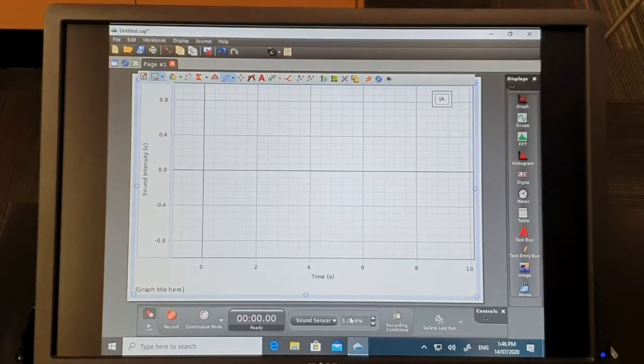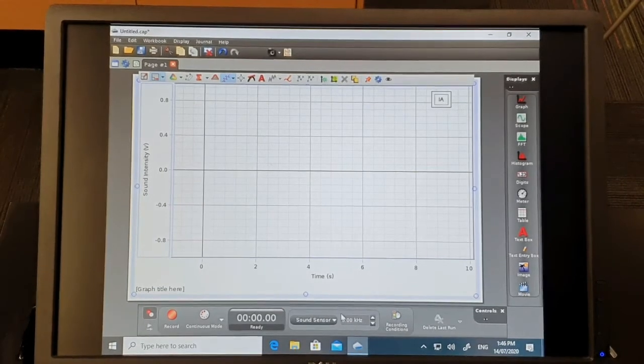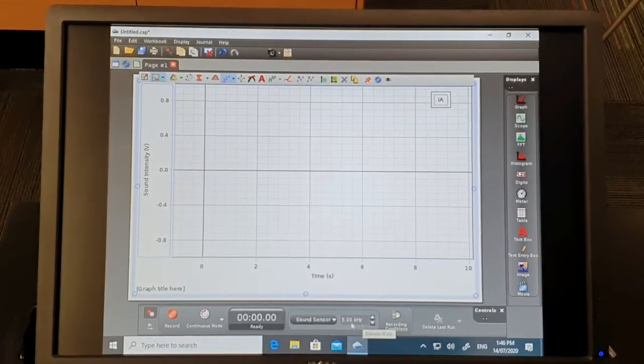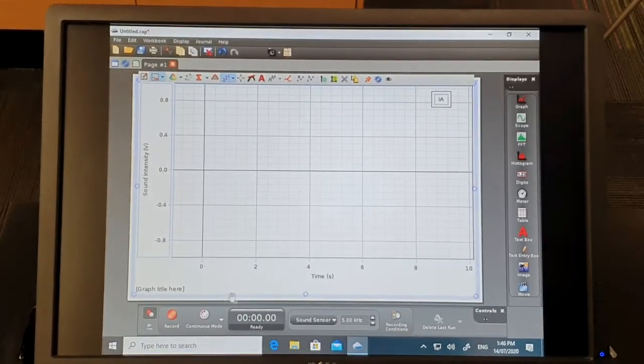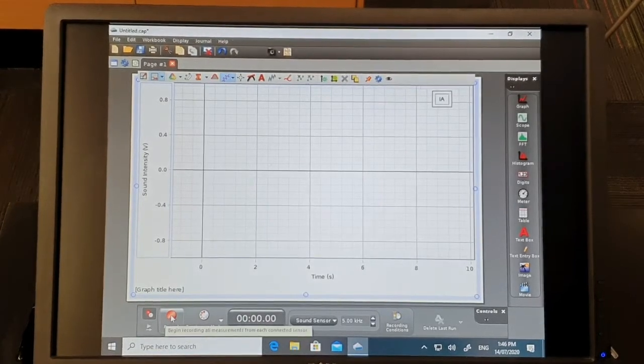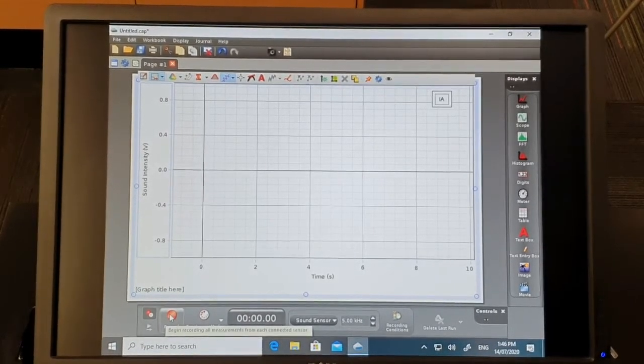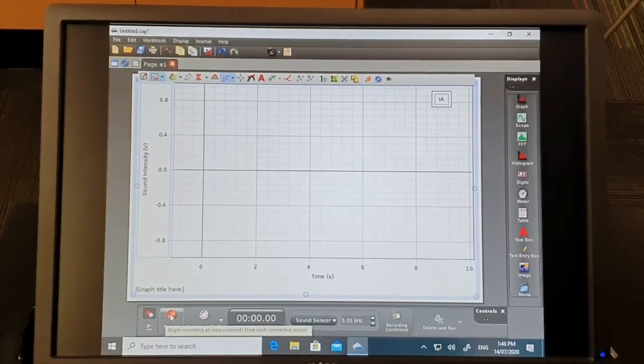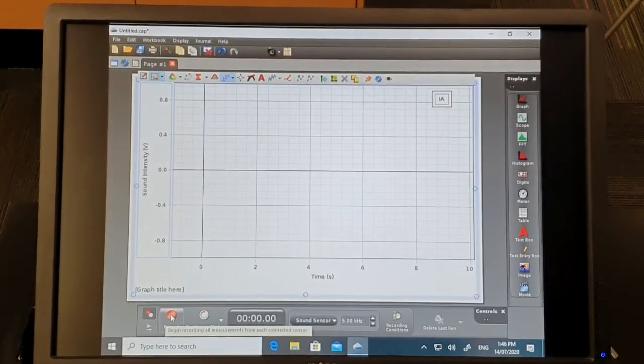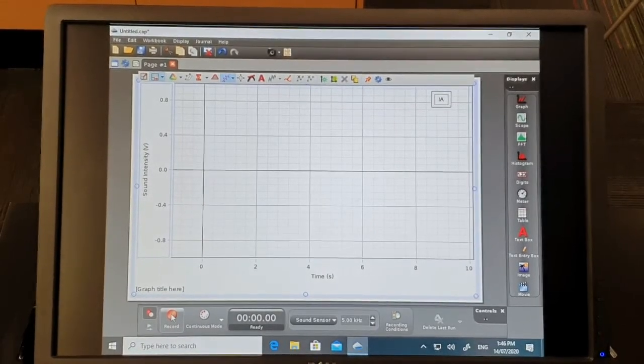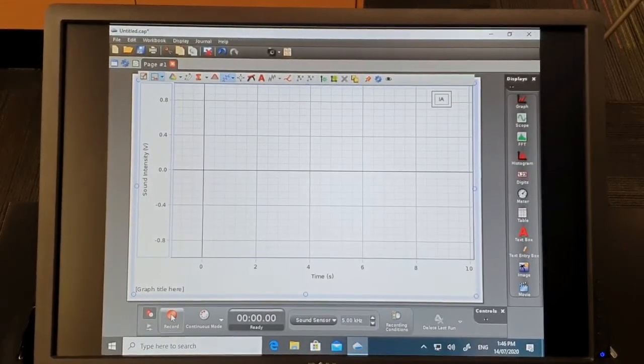Now I will adjust the frequency with which I'm going to detect the sound to five kilohertz. Over here I will start the recording. Once I've started that recording, I'll then make the short sharp sound. I'll click my fingers and we will record both the initial sound and the echo.